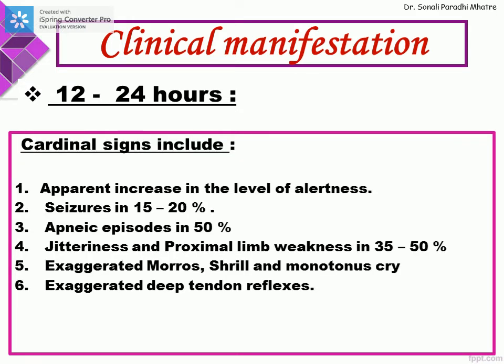In 12 to 24 hours after the insult, signs include apparent increase in the level of alertness. In around 15 to 20% of newborns, seizures can be seen, and approximately 50% can have apneic episodes. Jitteriness and proximal limb weakness is seen in 35 to 50% of cases. The child can have an exaggerated Moro and shrill, monotonous cry, with deep tendon reflexes also exaggerated.